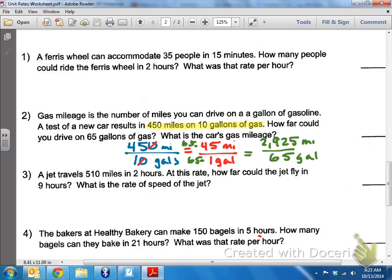Okay, so to answer our first question, how far can you drive off 65 gallons of gas? The first answer is 2,925. And then the question asks me, what is the car's gas mileage? So that's asking, what's the unit rate or what's the rate that I'm using gasoline? Well, that's the unit rate we found in red. That's 45 miles per gallon.